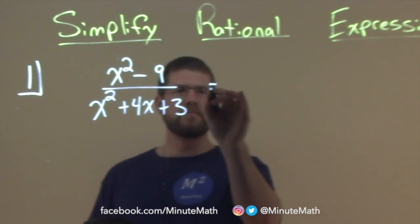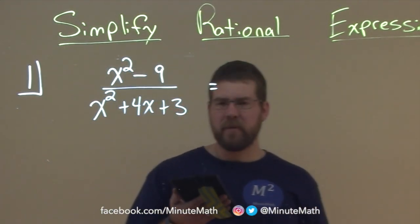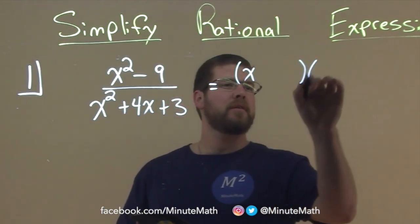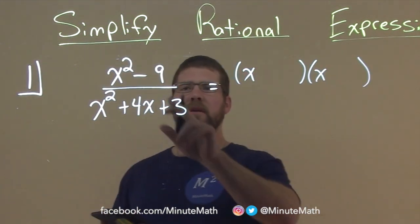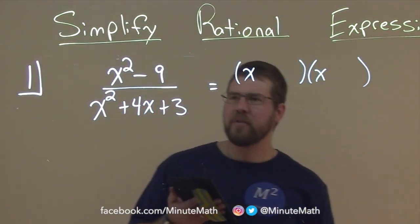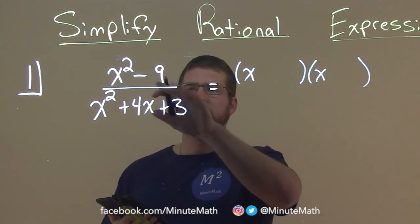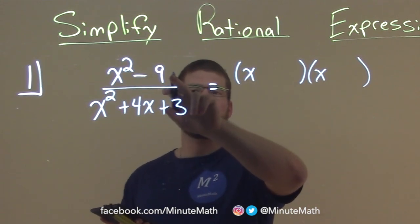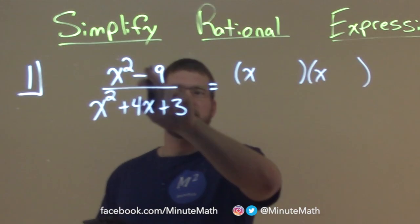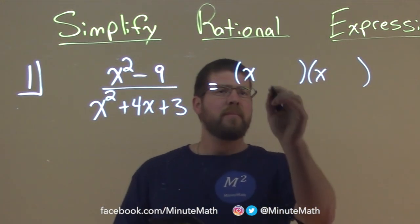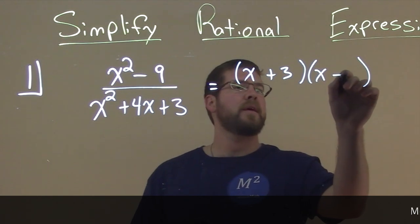Well, the numerator we can factor. We've practiced this skill before. We see we have x squared minus 9. And notice that what two numbers multiply to be negative 9, but add to be 0, the b value that's not there. Well, that would be a positive 3 and minus 3. So we have plus 3 and a minus 3. 3 times negative 3 is negative 9, but 3 plus a negative 3 is 0.